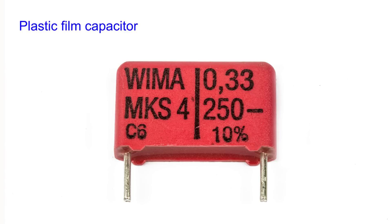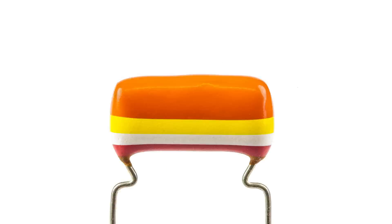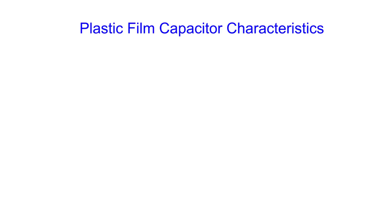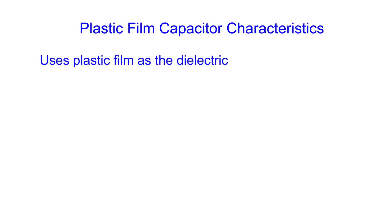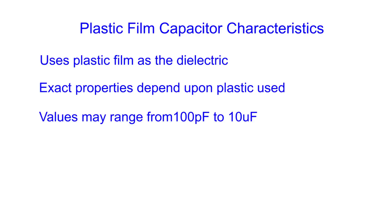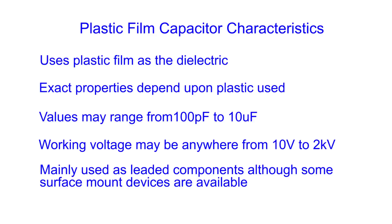Another type of capacitor that is widely used is the plastic film capacitor. Several different types of plastic film may be used, each having slightly different characteristics — names like polyester, polystyrene, and a host of other types are available. These capacitors may use a metalised film, or a plastic film with foil between the layers to form the plates. The exact properties are dependent upon the type of film used. Values may range from around 100 picofarads up to possibly even 10 microfarads, and they may have working voltages between 10 volts up to as much as 2 kilovolts. Generally these capacitors are used as leaded devices, although some surface mount versions are available, but they're not as common as other types because there are issues with the high temperatures used for soldering surface mount components.